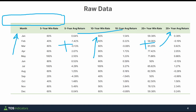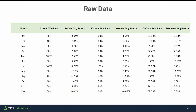I took all of this data and translated it into one easy-to-read table. On the left-hand side, we have all 12 months. For each month, I have both the five-year win rate along with the five-year average return, and this exercise is repeated for the five-year, the ten-year, and the twenty-year.